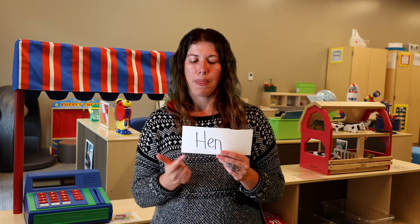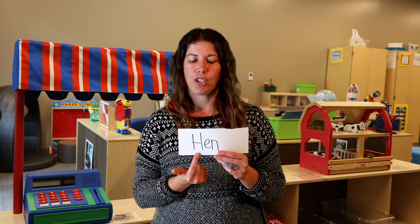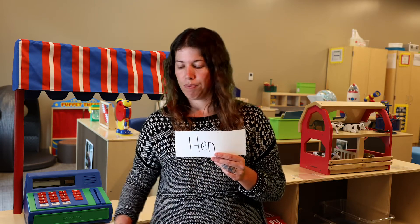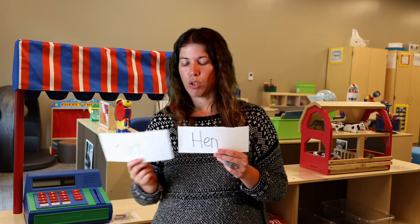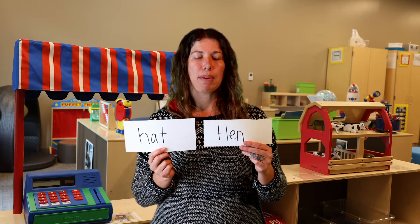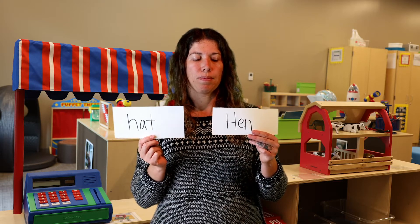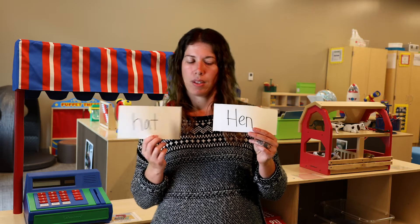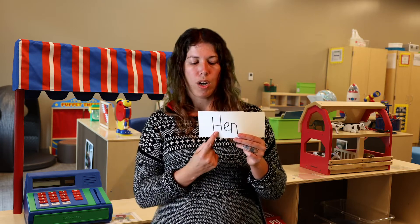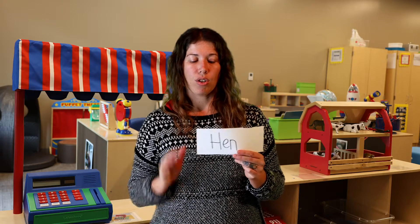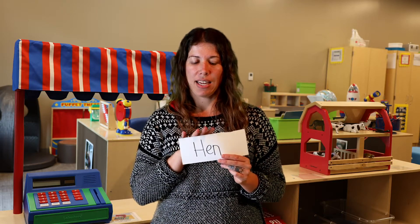We want to spell the words together. Let's spell 'hen.' H-E-N. Very short word. We have two short words this week. How many letters in these words? It's the same amount. Let's count them: one, two, three. So this is a three-letter word — hen.